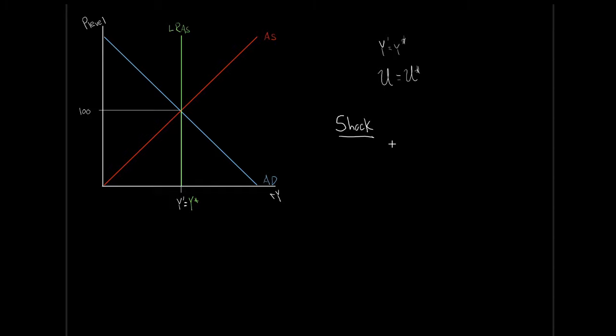If a shock hits our system — either a supply or demand shock — we'll be momentarily thrown into an inflationary output gap, and then engage in our natural adjustment process back to long-run equilibrium. A negative shock throws us into a recessionary output gap, and again natural market forces engage to bring us back. Keep in mind we have adjustment asymmetry: inflationary output gaps typically close relatively quickly, while recessionary output gaps, due to sticky wages, tend to take longer.